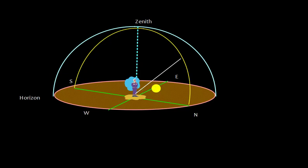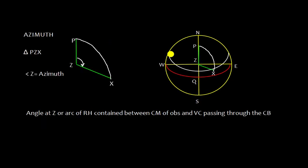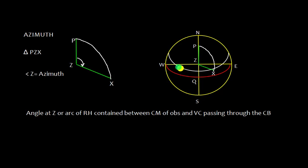Let's define the azimuth in a proper way. In this rational horizon diagram, north, south, east and west are the directions, and WQE is the equinoctial here. If the sun is rising like this, then the sun has to be at the rational horizon and will move on this declination circle. It will cross the observer's meridian and the sun will set in the west.